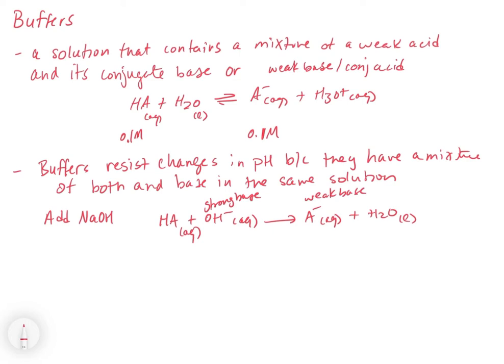We get rid of that strong base and convert it into a weak base. That is going to greatly reduce the effect on the pH because weak bases are not as strong as strong bases. That's going to minimize the effect of that strong base on the pH.